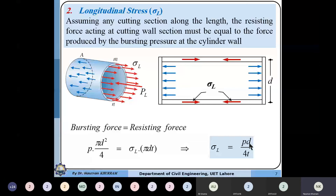So sigma_l = pD / 4t, where p is internal pressure, D is internal diameter, and t is wall thickness. The combined effect of bursting force and resisting force is tensile in nature — sigma_l acts away from the body. Longitudinal stresses are tensile; they tend to burst the cylinder. Fracture is always due to tensile forces. These are the longitudinal stress components acting along the length of the cylinder.